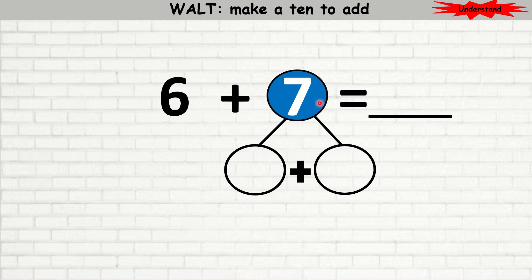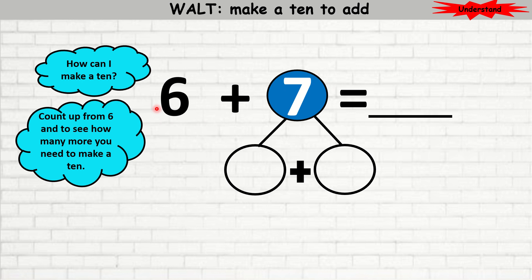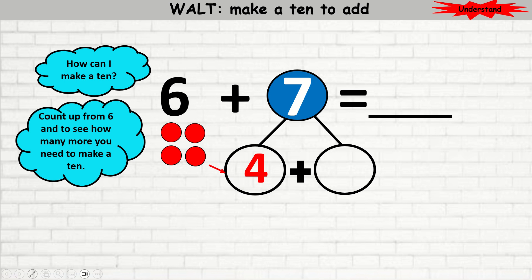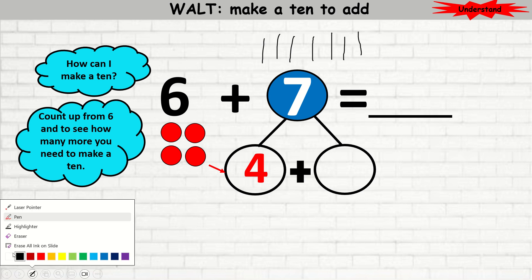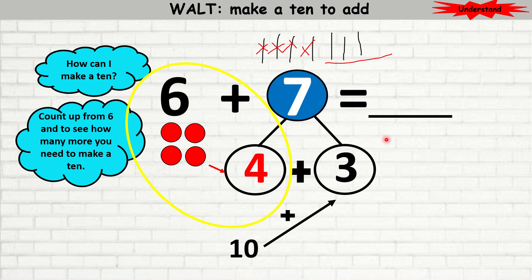Here's another example. I have 6 plus 7. Again, I need to make a 10. I'm going to break the 7 apart. I'm going to put the 6 in my brain and count up to 10 to see how many more I need. 6, 7, 8, 9, 10. So I will need 1, 2, 3, 4 — I need 4 more. Now you can count up from 4 to 7 to see how many more you need, or you can draw sticks: 1, 2, 3, 4, 5, 6, 7, and take away the 4. So I'm going to take away 1, 2, 3, 4. How many more do I need? I need 3 more. You can check your answer because 4 plus 3 is 7. Now I've made a 10. 6 plus 4 is 10. 10 plus 3 is 13.